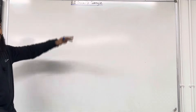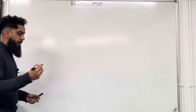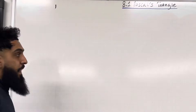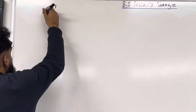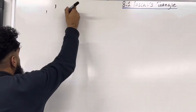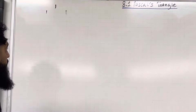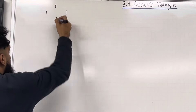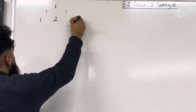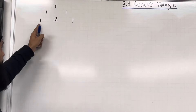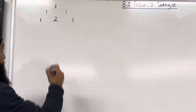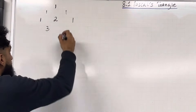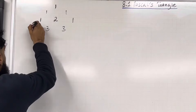Now, Pascal's Triangle — what does it look like? We're going to start off with a 1. Then on the outside of the triangle we have 1s: a 1 here and a 1 here. In between 1 and 1 will be 1 plus 1, which is 2. And then on the outside we will have 1. In between 1 and 2 will be 1 plus 2, which is 3.